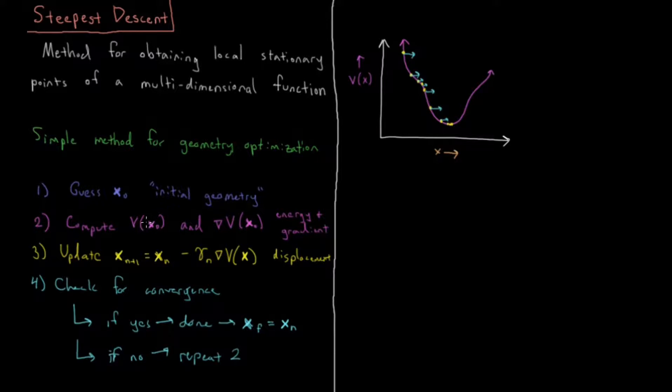So we're going to compute the energy, guess an initial geometry, compute the energy and the gradient, use the gradient to displace and update the geometry. We're going to check for convergence, we're going to check if our energy isn't changing anymore, if our gradient is approximately zero, and if our displacement is approaching zero as well.